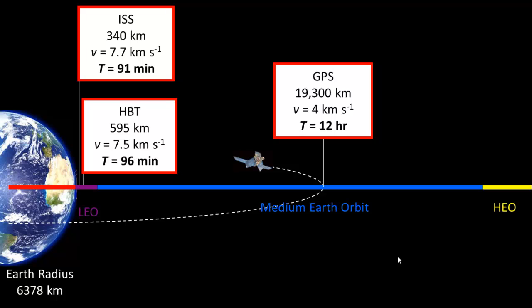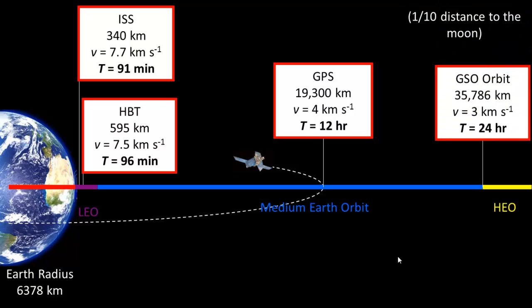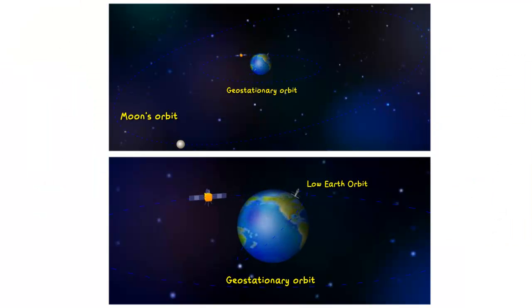For an orbital period of 24 hours, we have to bring the satellite to 35,786 kilometers above the Earth's equator. It's a long way out, but it's worth it if you want to be geostationary.